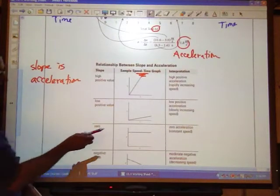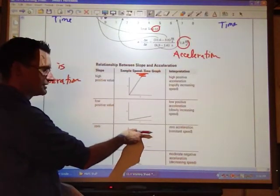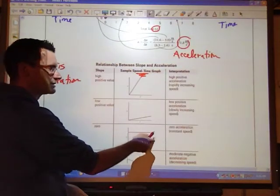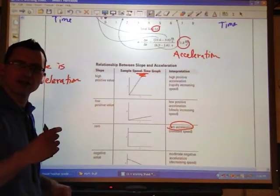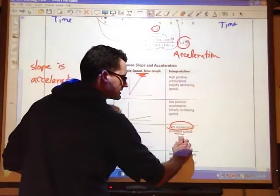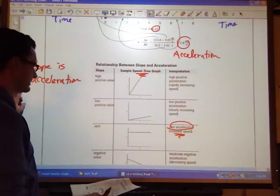Low positive acceleration goes along with low positive slope. And if we have zero slope, a flat horizontal line, that means there's no slope, that means no acceleration. It's zero. So that means you're not speeding up, you're not slowing down, you're going at a constant speed. So that's what zero acceleration indicates.